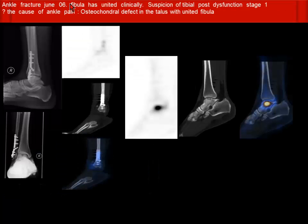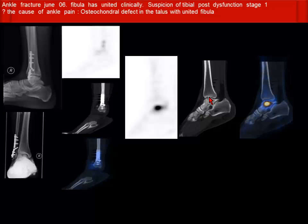Another patient with an ankle fracture — the fibula is clinically united but the patient had persistent pain. The question was whether there was malunion or nonunion at the surgical site. On the three-phase bone scan delayed images there was nothing — no significant increase in metabolic activity. But on the talus there are two lucency areas corresponding to increased uptake, which is a classical finding of osteochondral defects.